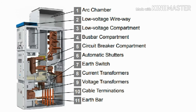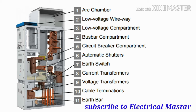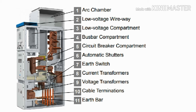Now we will see where these major components are fixed in the switchgear panel. This is the medium voltage switchgear panel. First, at the top side of the panel is the arc chamber — when an arc fault occurs, this arc chamber helps to contain that arc fault. Second, you can see the blue color on the top side, that is the low voltage wireway where low voltage component wires are terminated.